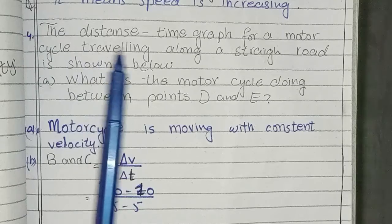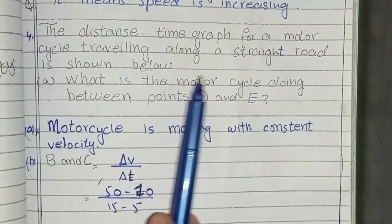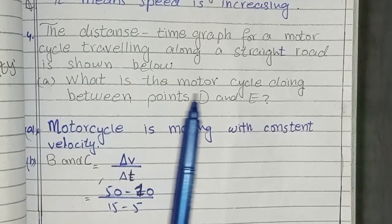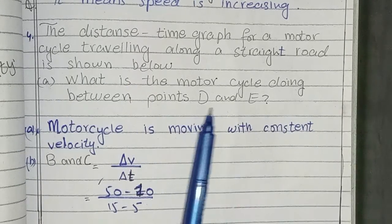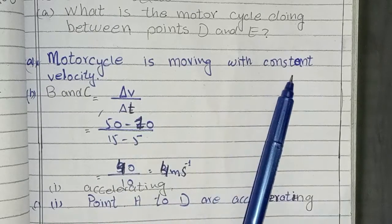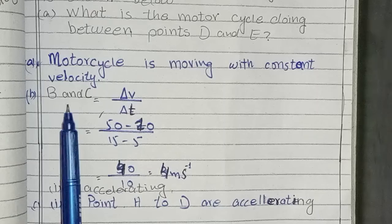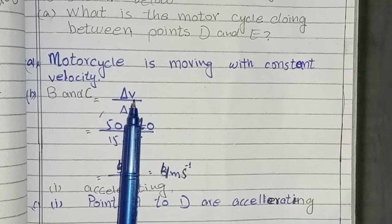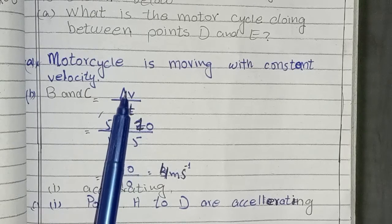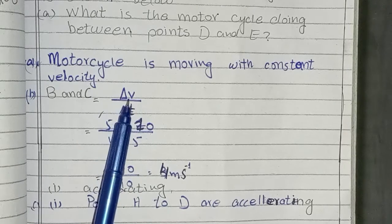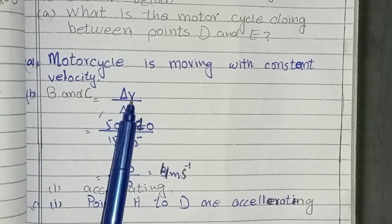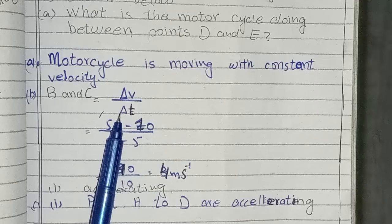Question number 4: The distance-time graph for a motorcycle traveling along the straight road is shown below. A question is: What is the motorcycle doing between point D and E? Answer: Motorcycle is moving with constant velocity. B and C is equal to delta velocity. This sign means the difference between two velocities. We will find the difference: delta velocity divided by delta time.